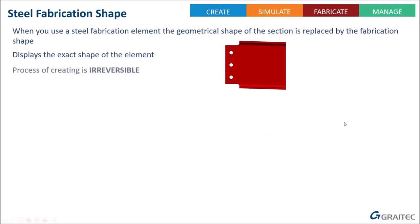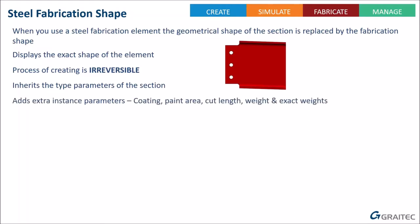Once the system has changed a member to a steel fabrication shape, the process is irreversible. Even if you delete the connection or the contour, that member is still a steel fabrication shape. The only way to undo it is to delete the member and remodel it. This is an important consideration when using these tools. The element still inherits the type parameters of the section - it remains a structural framing or column.